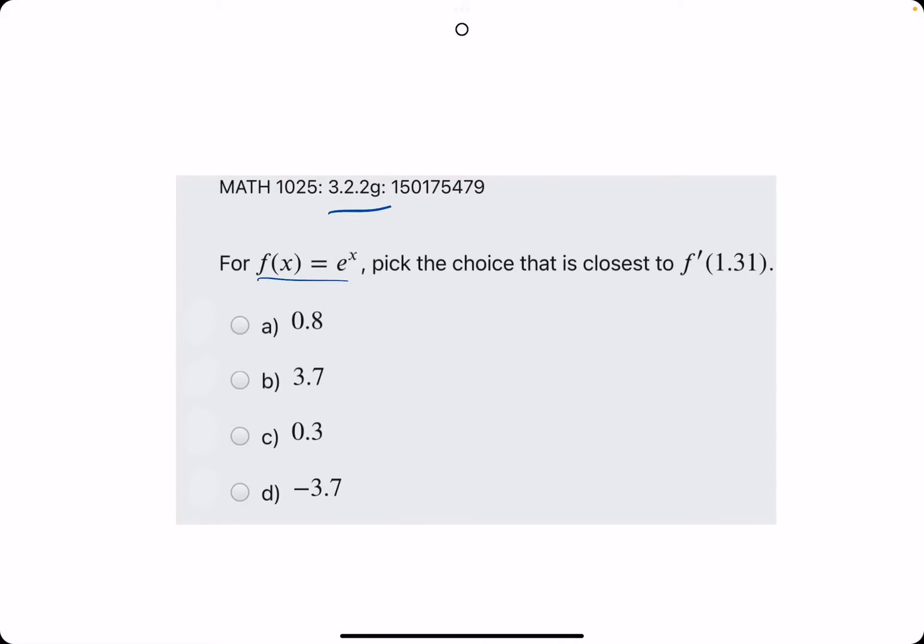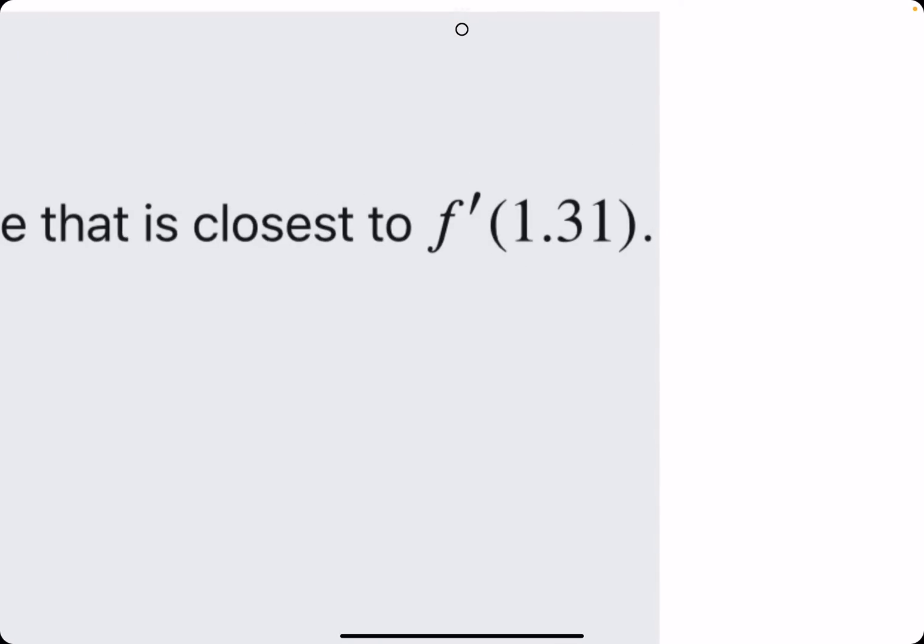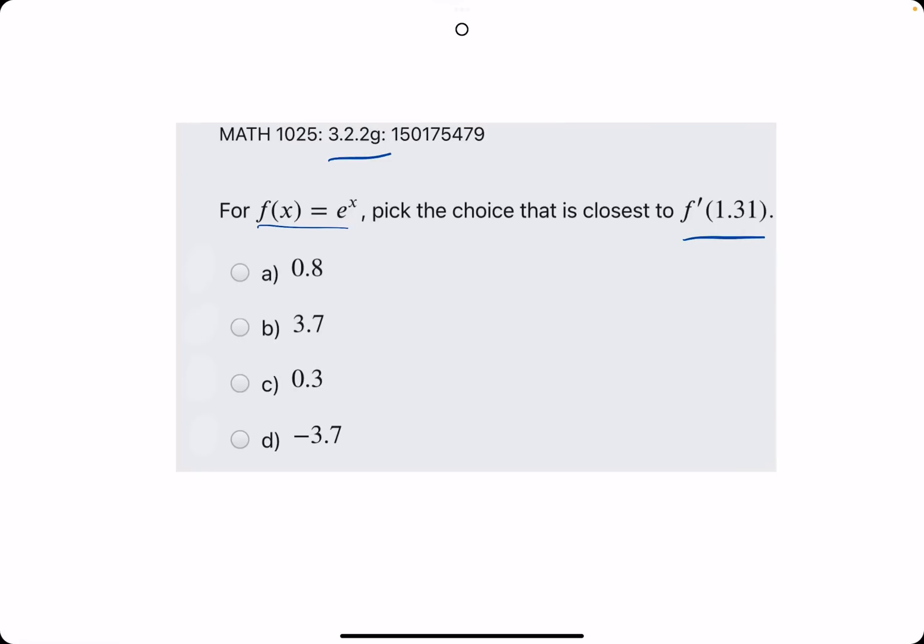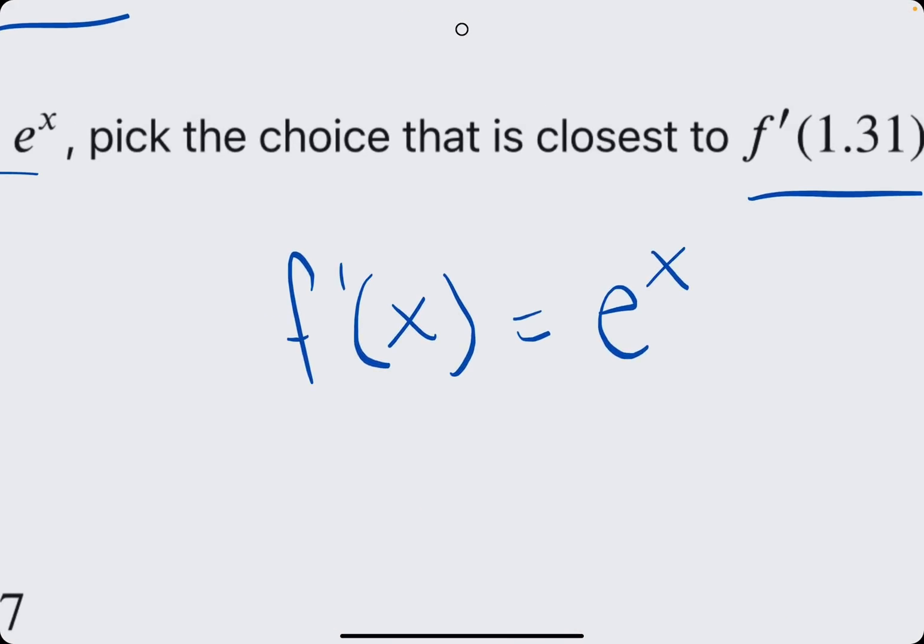322g, they give us the function e to the x, and they ask, which value is closest to f prime of 1.31? So first, we want to find the derivative, f prime of x, which for e to the x is just e to the x.